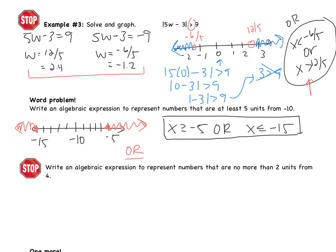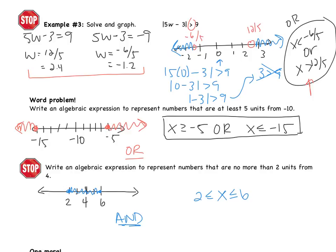Pause the video and try the next example on your own. The problem says: write an algebraic expression to represent numbers that are no more than two units from 4. Place 4 in the middle of the number line. Two units higher is 6, two units lower is 2. No more than two units means two units or less — everything in between. This is an and compound inequality: 2 is less than or equal to x is less than or equal to 6.